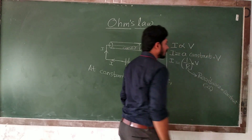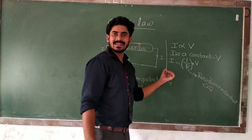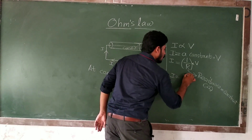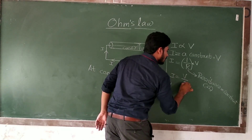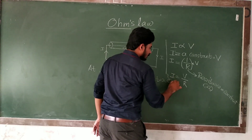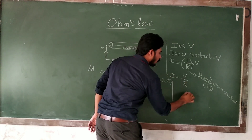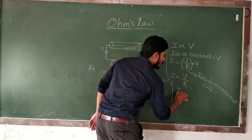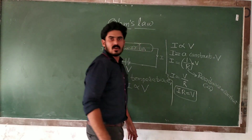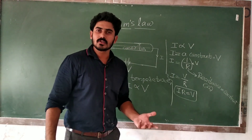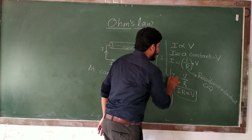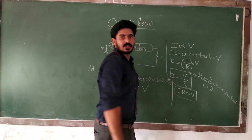So, I is equal to 1 by R into V, or I is equal to V by R. I is equal to V by R, or I into R is equal to V, meaning V is equal to I into R.